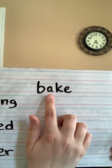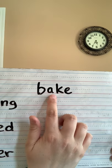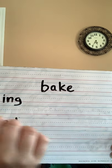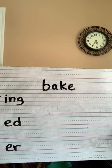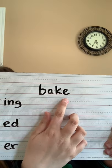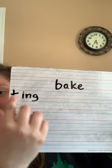Instead of the short 'a' sound, it says 'a' — B, A, K — and the E is silent. So now we have to drop this magic E and add our ending.